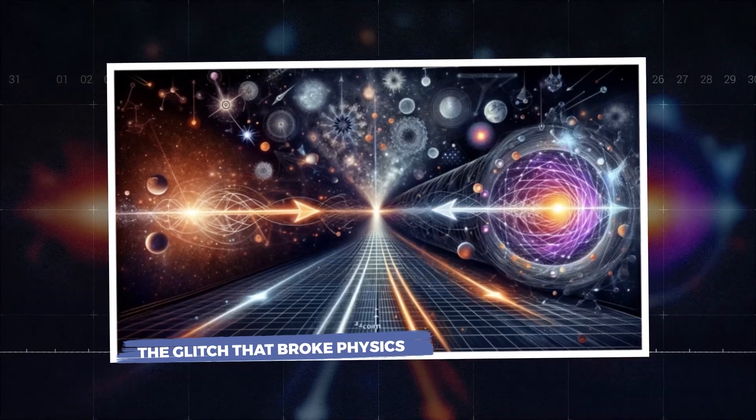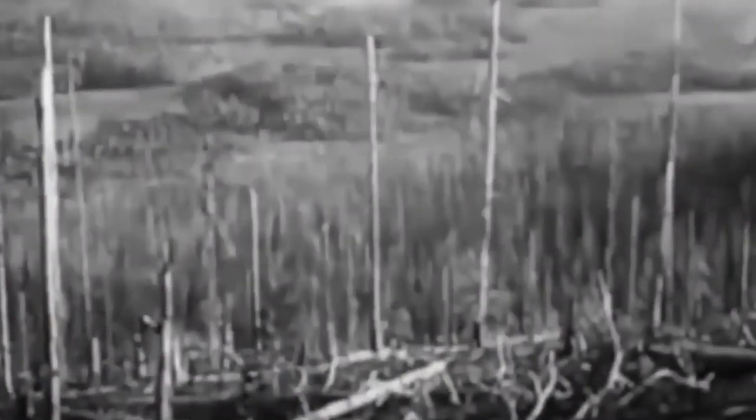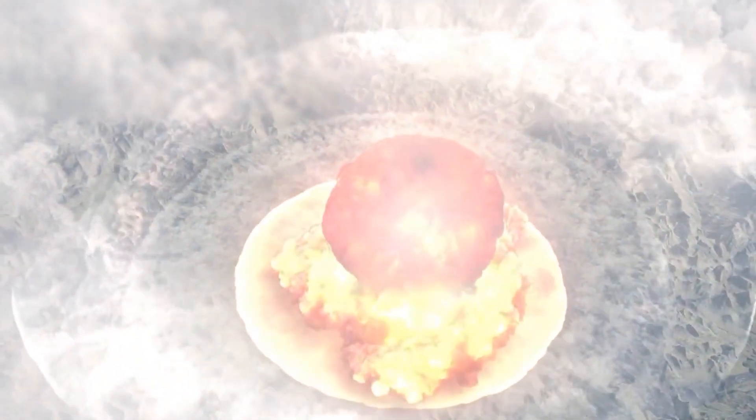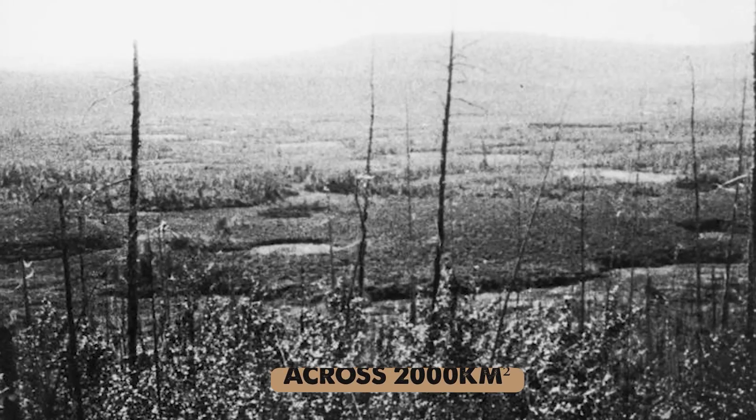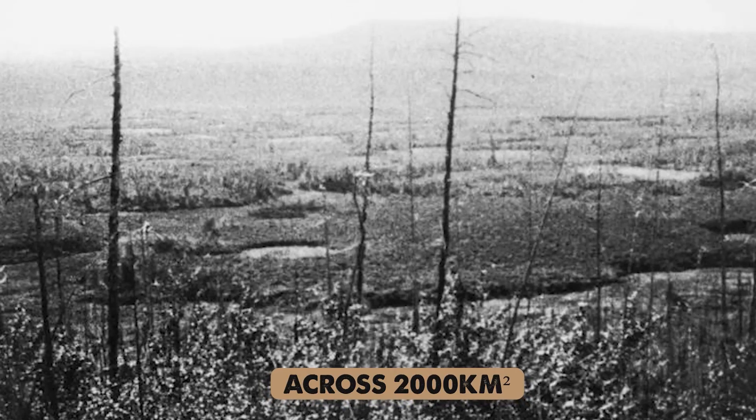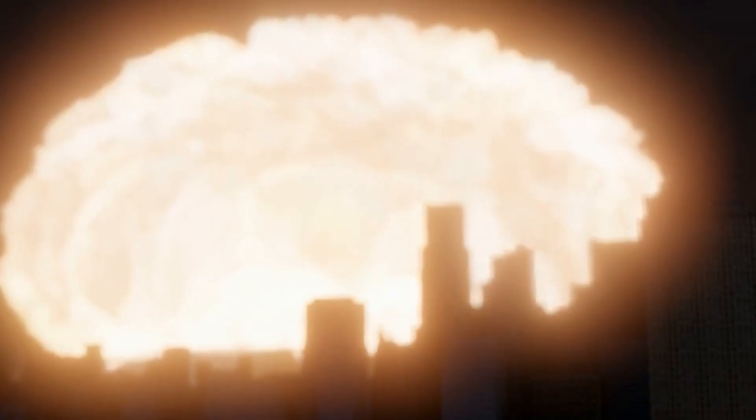The glitch that broke physics. The Tunguska event of 1908 was a beast. An unseen force detonated high in the sky over a remote part of Siberia, unleashing a blast that wiped 80 million trees off the map across 2,000 square kilometers. To give you some perspective, that's an area the size of Greater London. If that same explosion had happened over a major city, millions would have been gone in a flash.